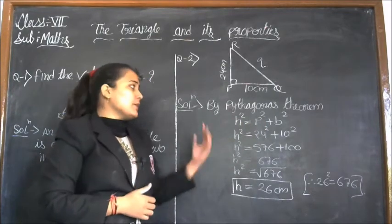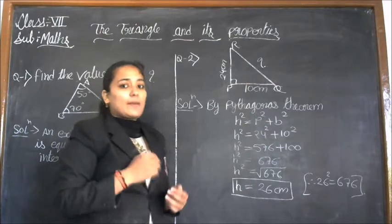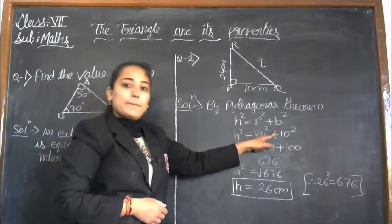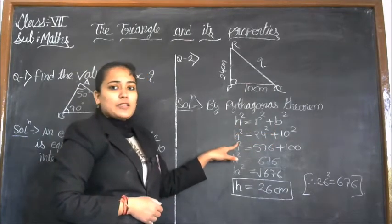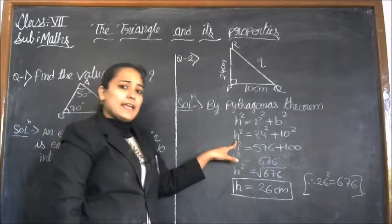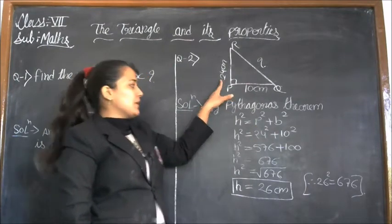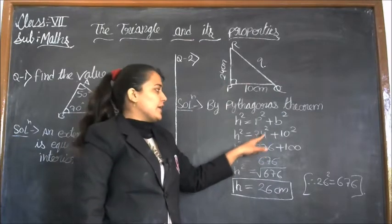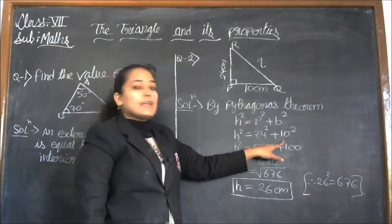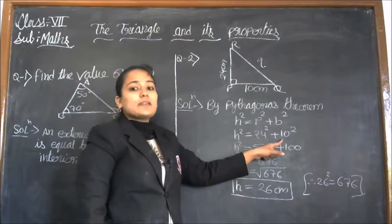What is the Pythagorean theorem? It states H² = P² + B², meaning hypotenuse squared equals perpendicular squared plus base squared. Hypotenuse is not given here, so we write H² = 24² + 10².